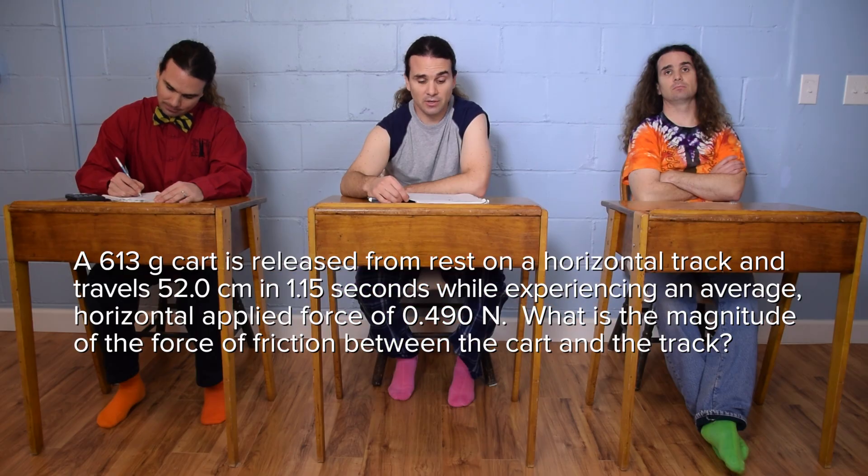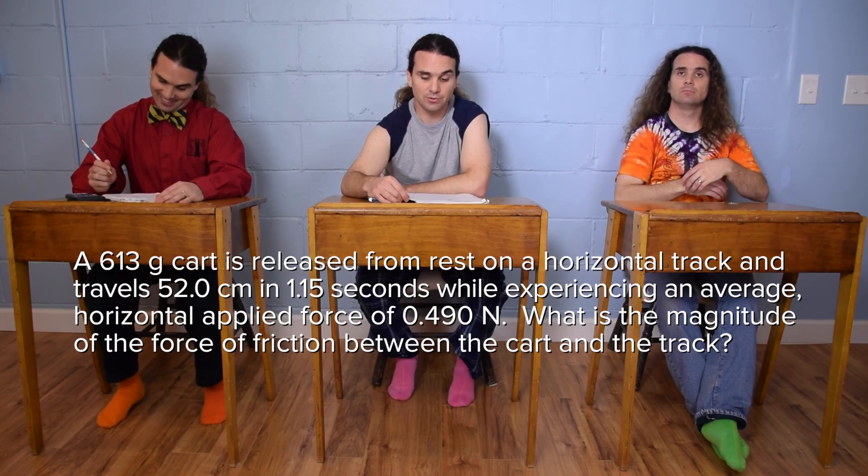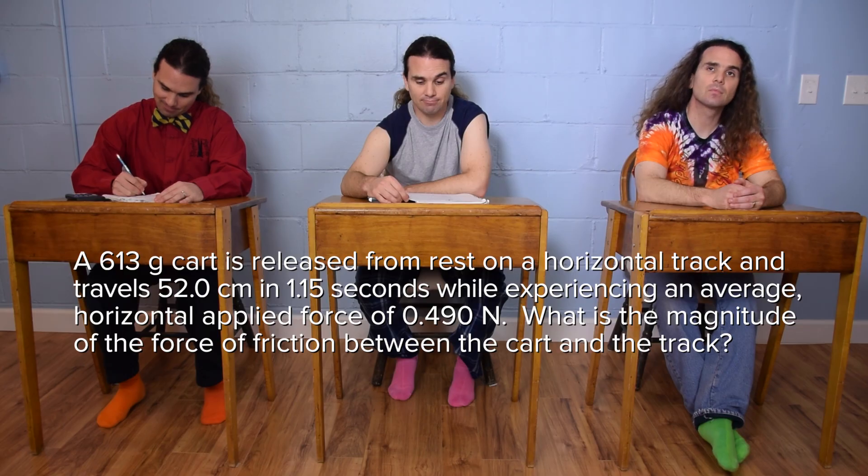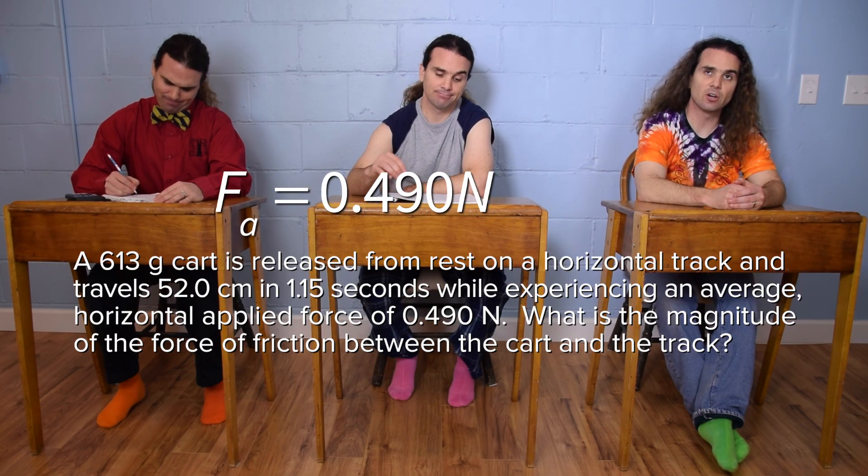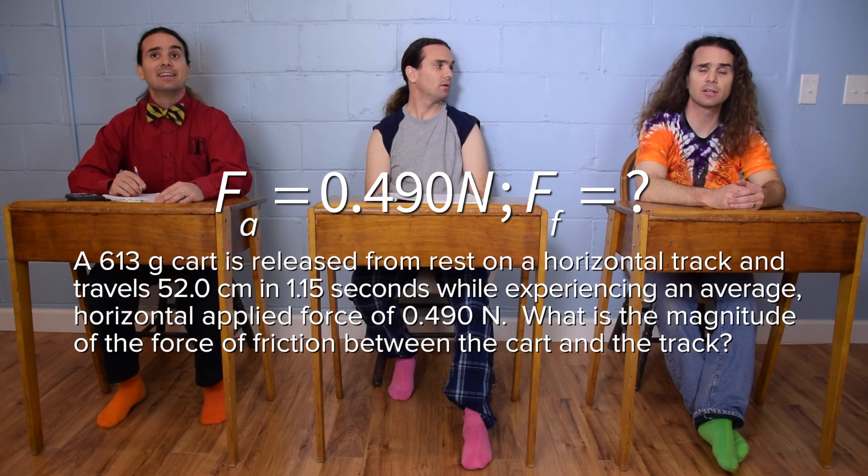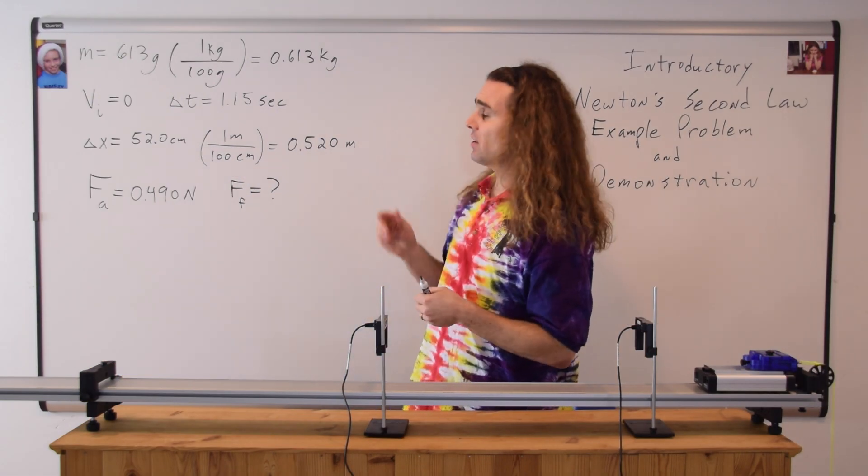While experiencing an average horizontal applied force of 0.490 newtons, what is the magnitude of the force of friction between the cart and the track? Force applied equals 0.490 newtons, and the force of friction equals question mark. Good. We've determined all of our givens.